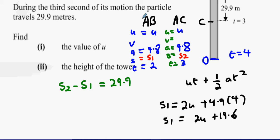s2 however is going to be 3u plus 4.9 times 9, which is 44.1.